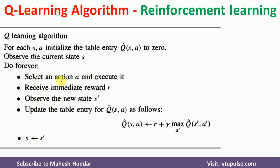In the first step, select an action A and execute it. From the current state, we can perform different actions. We select one action and execute it. Once that action is performed, we will get the immediate reward R. And whenever you perform action A, you will move from current state S to a next state S'.